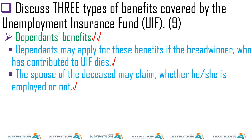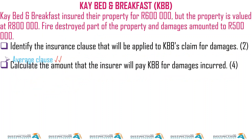Then we have dependent benefits. Dependents may apply for these benefits if their breadwinner who has contributed to UIF dies. Your children depend on you, and if you die, they can claim with UIF because you were contributing while employed. The spouse of the deceased may claim whether employed or not.